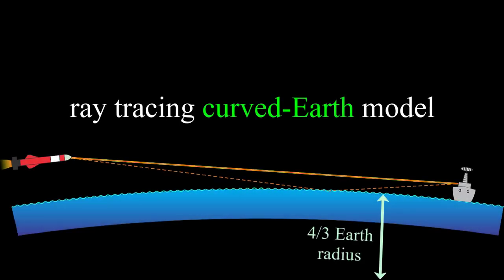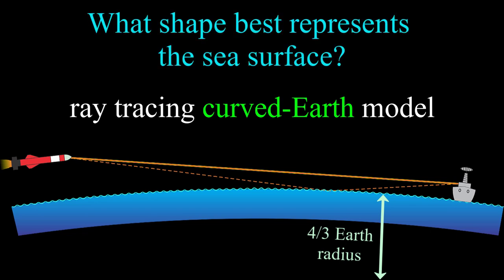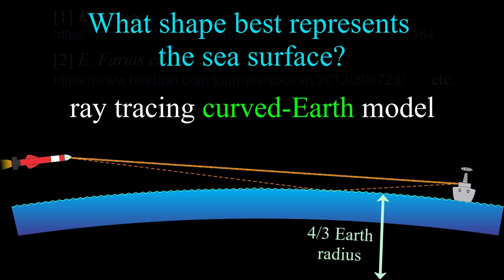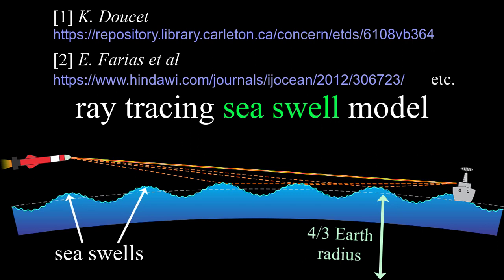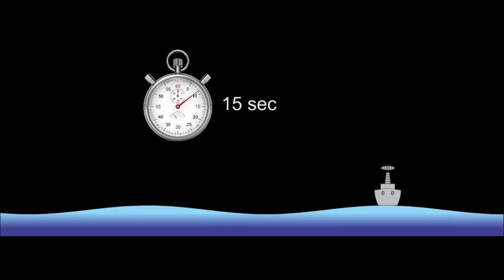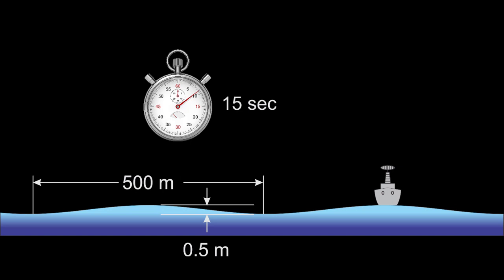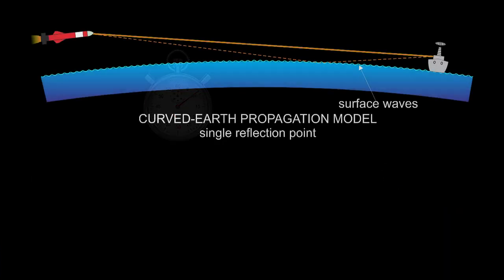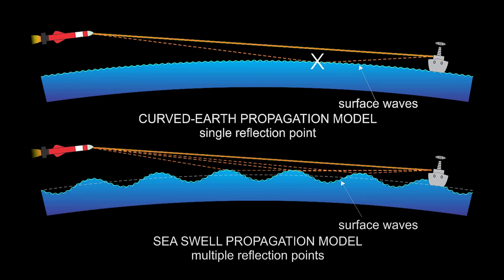All the results so far have the sea surface between the transmitter and receiver as part of a sphere. Is this a correct representation? According to the open literature, the sea surface is better represented by corrugations wrapped onto a spherical surface, with surface waves riding on top — these corrugations are called sea swells. Sea swells are long-period, long-wavelength, low-amplitude waves; for example, a period of 15 seconds, a wavelength of half a kilometer or more, and amplitude of much less than a meter. The main difference from the curved Earth model is that whereas the curved Earth model only allows for a single specular reflection point, the sea swell model allows for multiple reflection points.